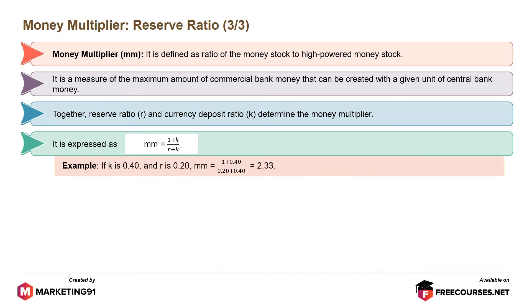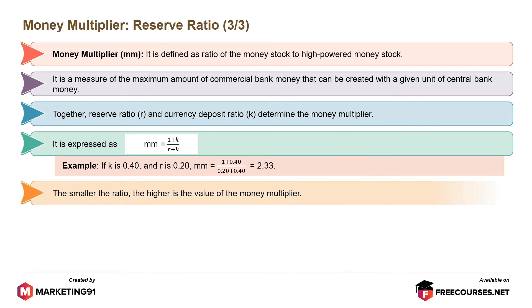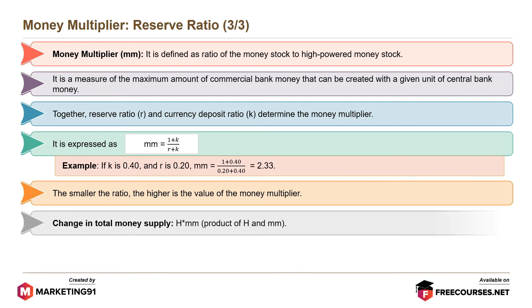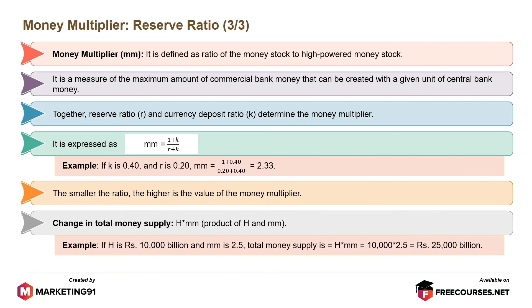For example, if K is 0.40 and R is 0.20, MM equals (1 plus 0.40) divided by (0.20 plus 0.40) equals 2.33. The smaller the ratio, the higher is the value of the money multiplier. Change in total money supply is expressed as H into MM. For example, if H is Rs. 10,000 billion and MM is 2.5, total money supply will equal 10,000 into 2.5 equals 25,000 billion.